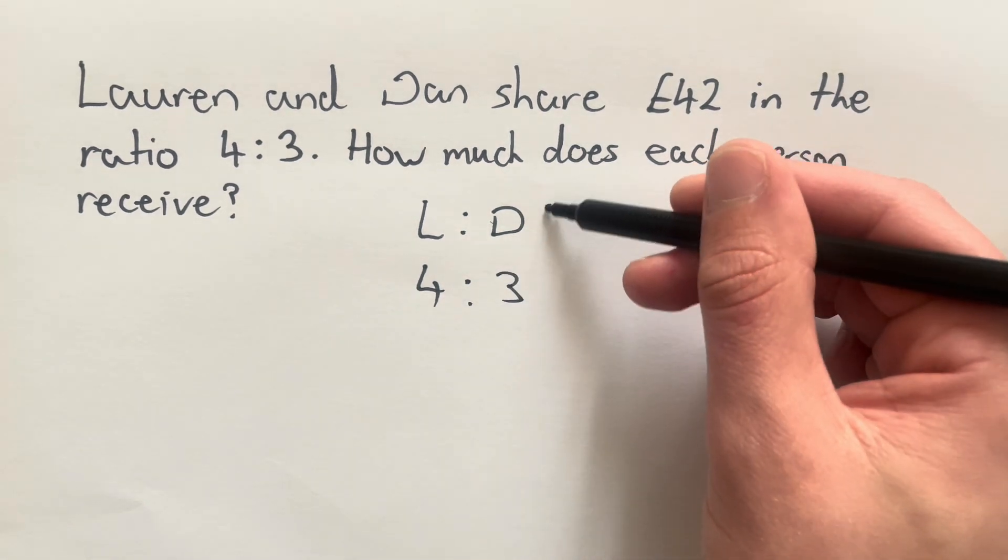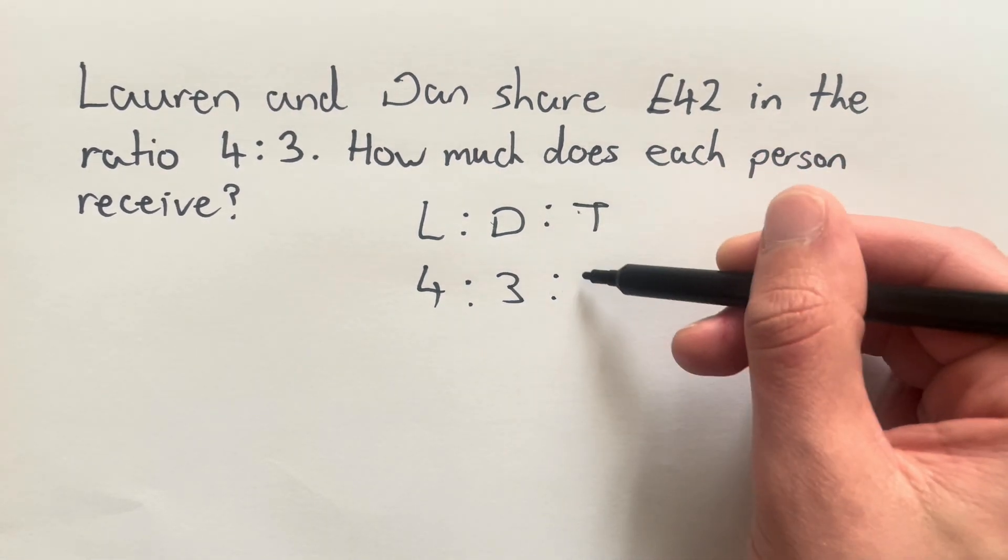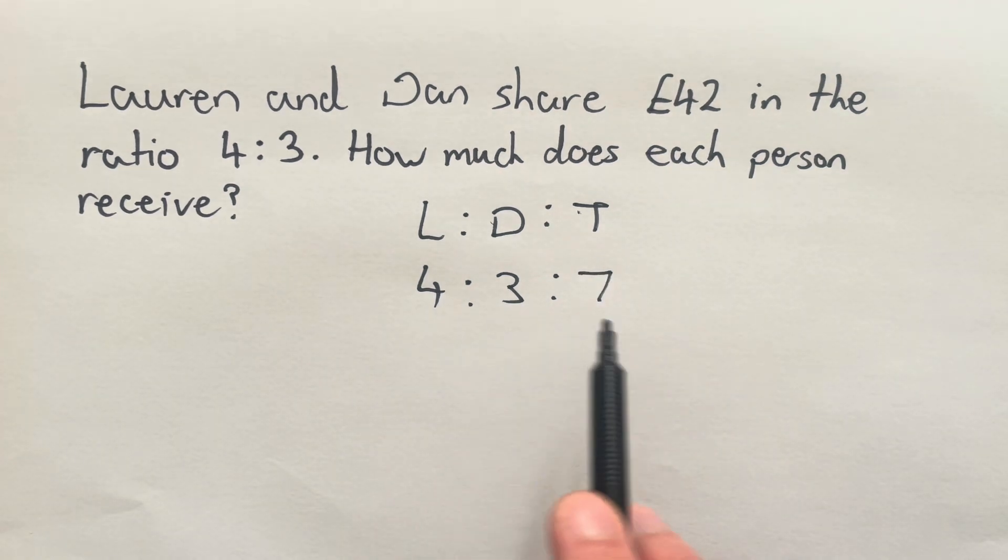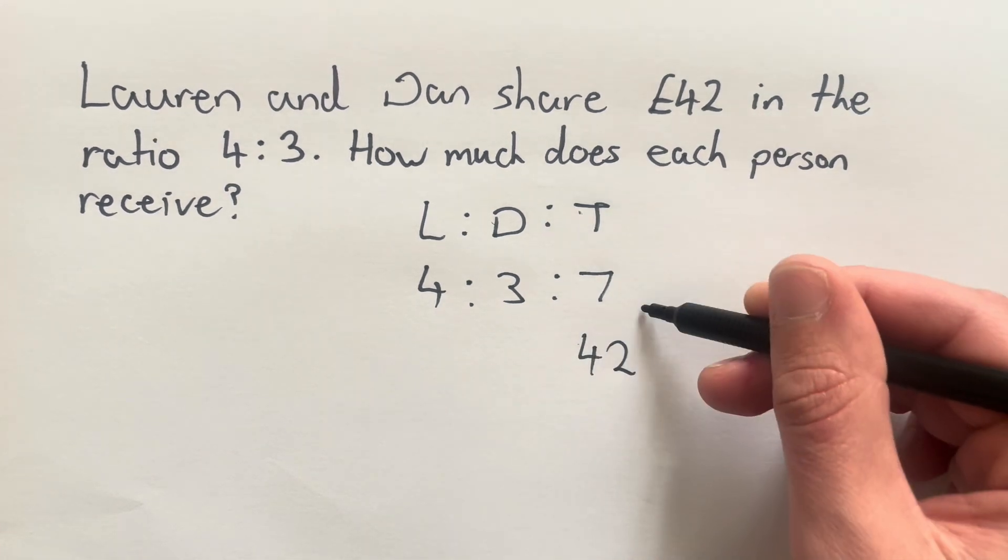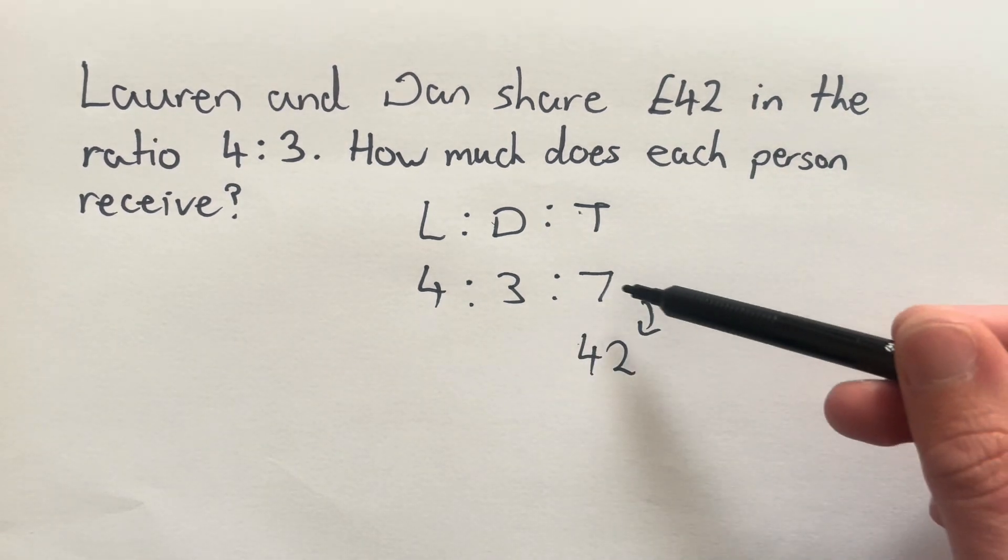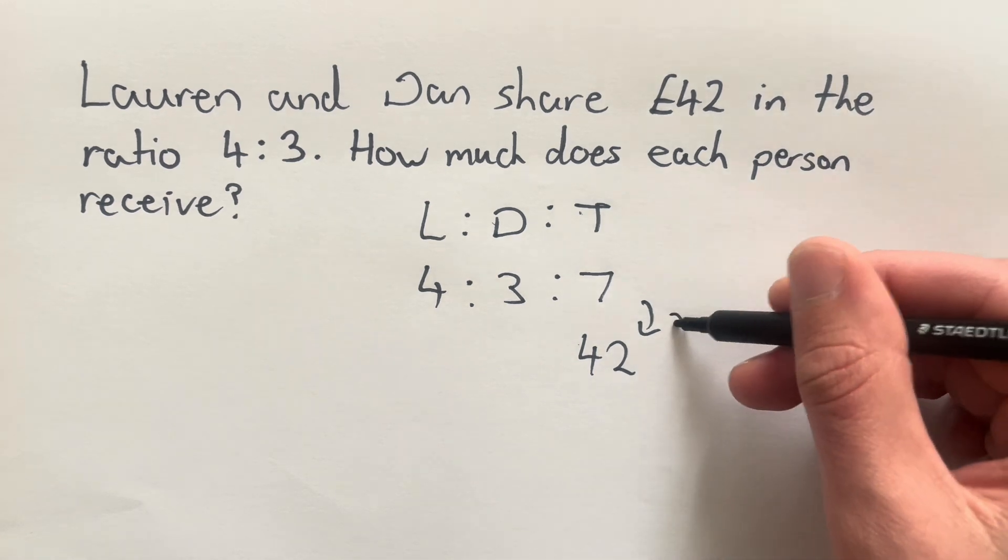Again, we're working with a total. And my total here is going to be seven. Four add three gives us seven. Now, our real total was £42. So I'm going to put that underneath. And I find that I need to multiply seven by six to make 42. So to create two equivalent ratios, I need to multiply everything in this first ratio by six.